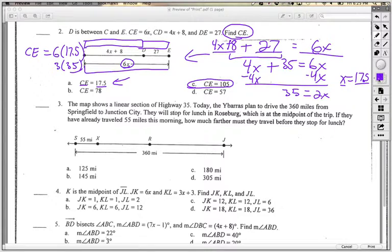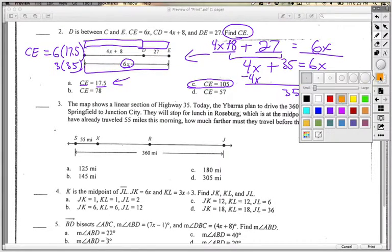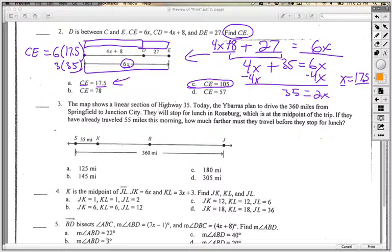All right, let's do another one here. New color. The map shows a linear section of highway 35. Today the Ibaras plan to drive 360 miles, so there they are. There's 360 miles from Springfield to Junction City. They will stop for lunch in Roseburg, I think this is Roseburg right here. Which is at the midpoint. That's an interesting word. If they have already traveled 55 miles this morning, how much farther must they travel before they stop for lunch?